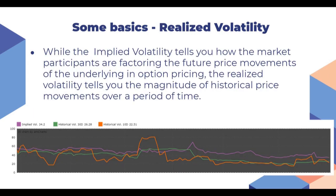What is realized volatility? While implied volatility tells you how market participants are factoring future price movement of any underlying, realized volatility tells you the magnitude of historical price movements over a period of time. Looking at this chart, it gives you IV as well as historical volatility of 30 days and 10 days for the same underlying. The purple line is IV, the green one is HV of 30 days, and the orange one is HV of 10 days.